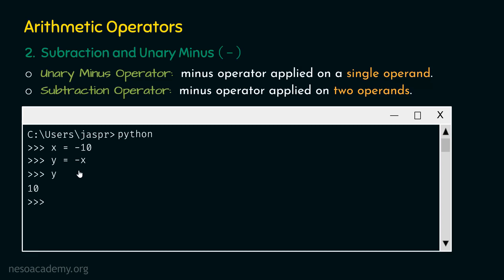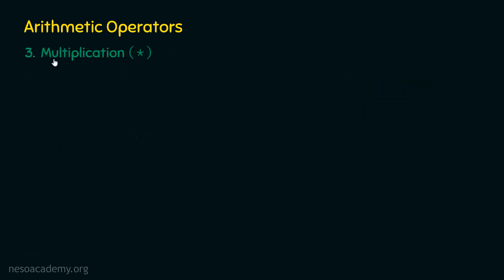Now let's understand how the subtraction operator works. Let's type three minus four. Three minus four gives us minus one, and after hitting enter we get minus one as a result. With that, we are done with subtraction and unary minus. Let's move on to the third operator: multiplication.